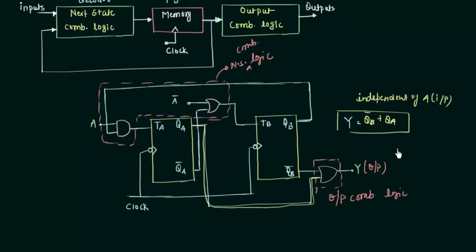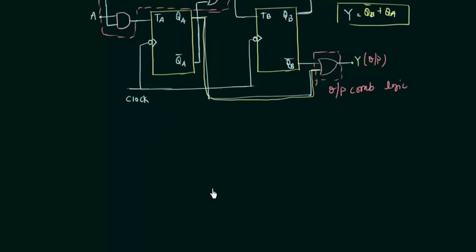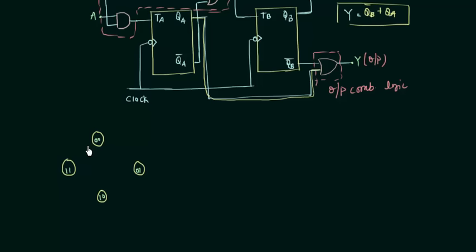If you want to make the state diagram, there will be some changes compared to a normal original state diagram. Consider an original state diagram having 4 states: 00, 01, 10, and 11. Depending upon the inputs, the output is generated and the state changes from one to another. I will complete it randomly to illustrate the transitions.